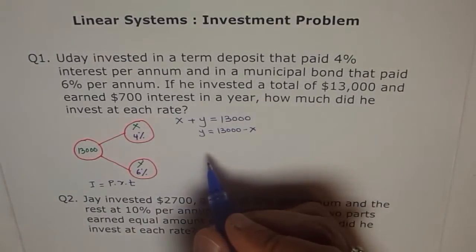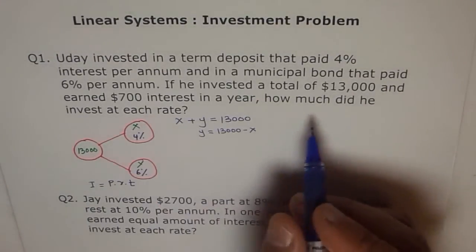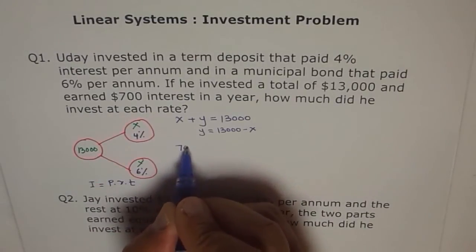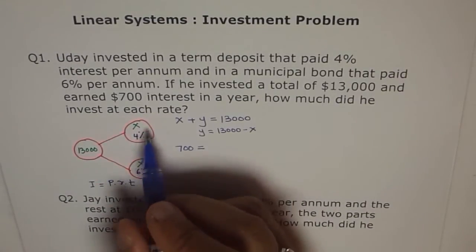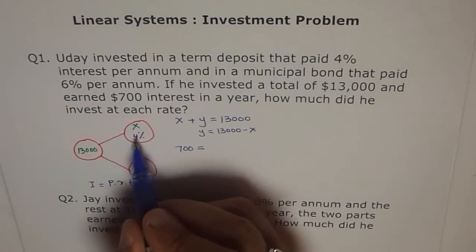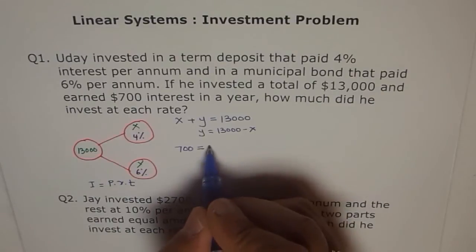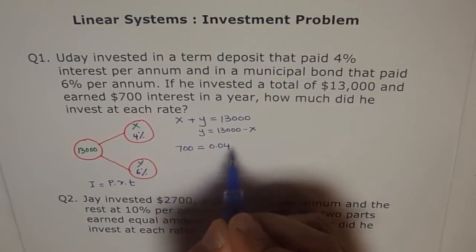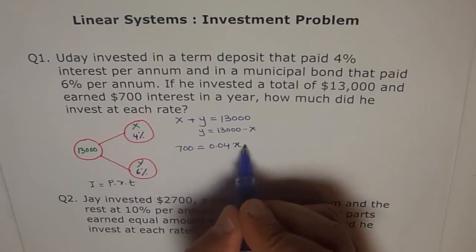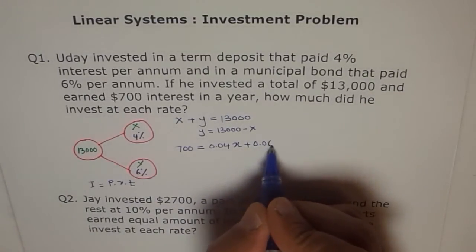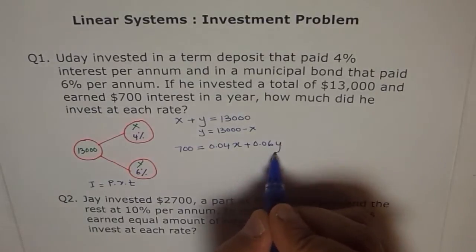Now, what is the second equation? Second equation is interest. Total interest earned is $700. So, that total interest earned is $700 here. And how much on each do we earn? 4% on X amount, 4% means 4 divided by 100, which is 0.04 of X. Plus 6% of Y. So, 6% of Y is 0.06 of Y.